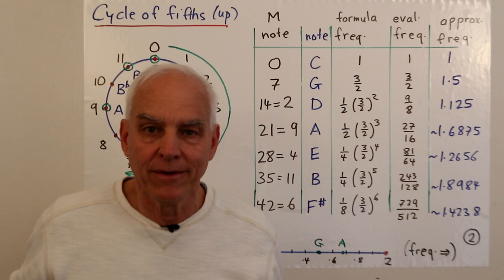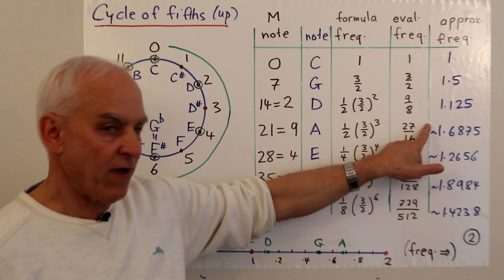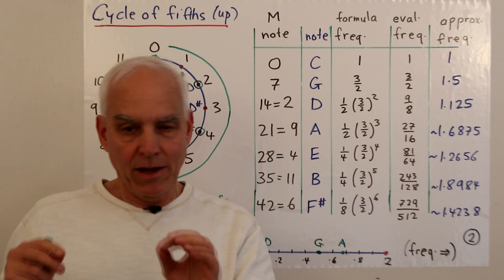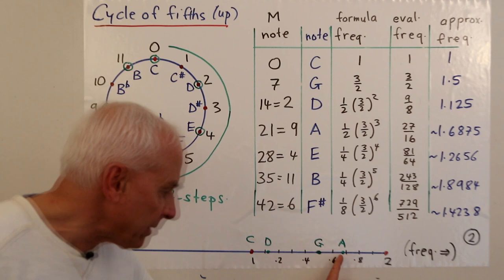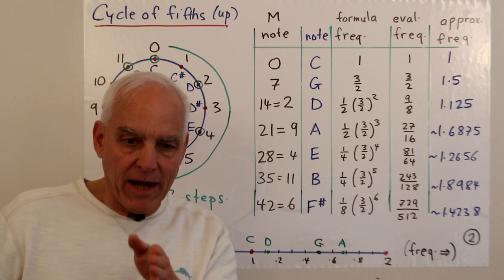How close are 5/3 and 27/16? Comparing the fractions: 16 × 5 = 80 and 3 × 27 = 81. If those products were equal the fractions would be equal, but 80 and 81 are close though not the same. So the two fractions are close but not identical — already at this stage we're seeing that the exact position of A is a matter of some disagreement, like where exactly to place the guitar fret.